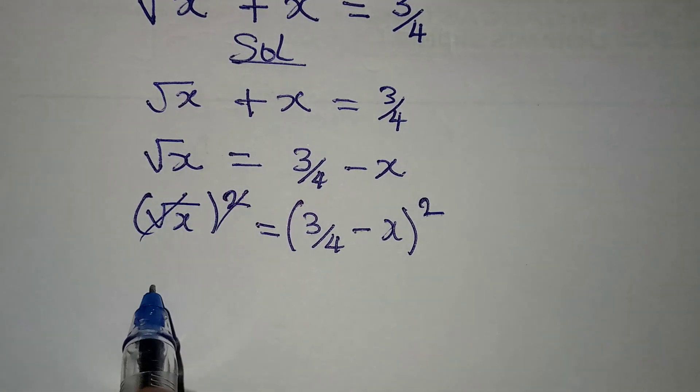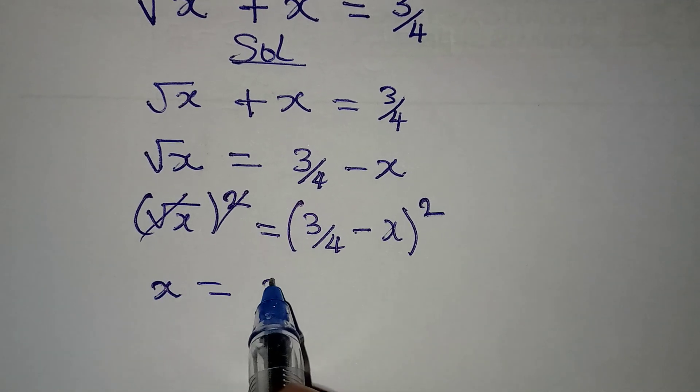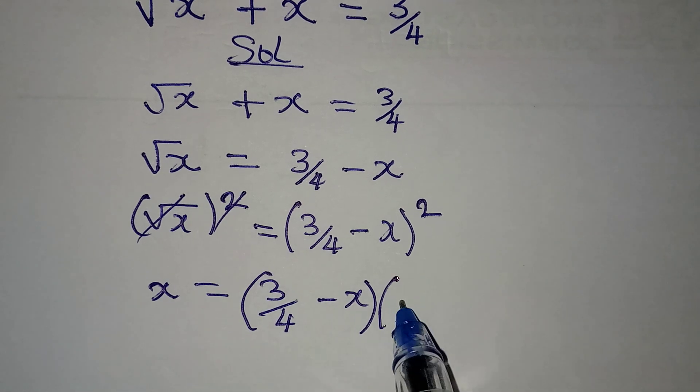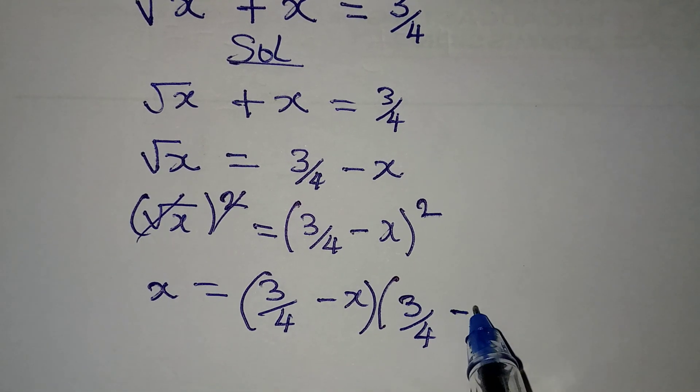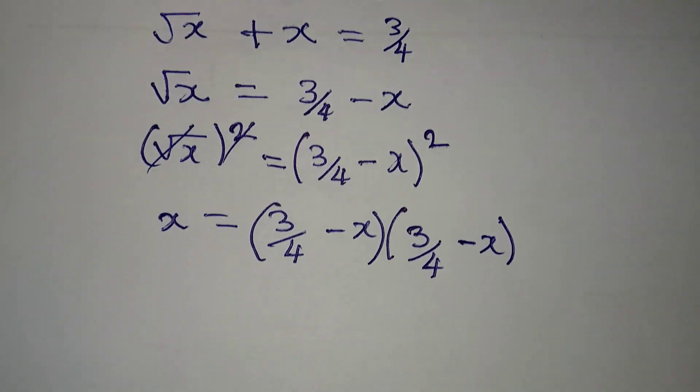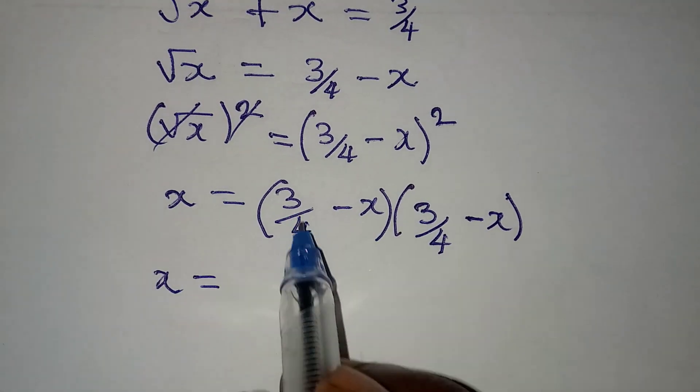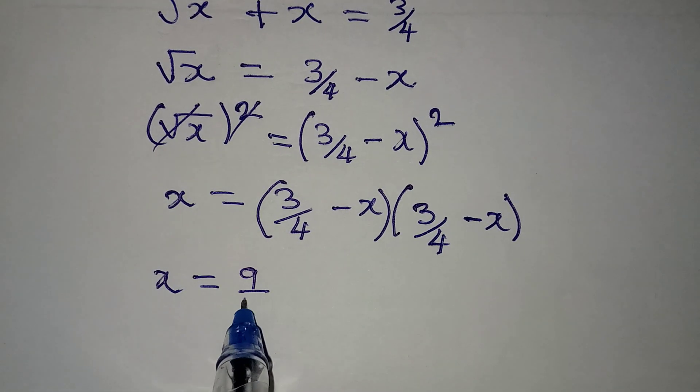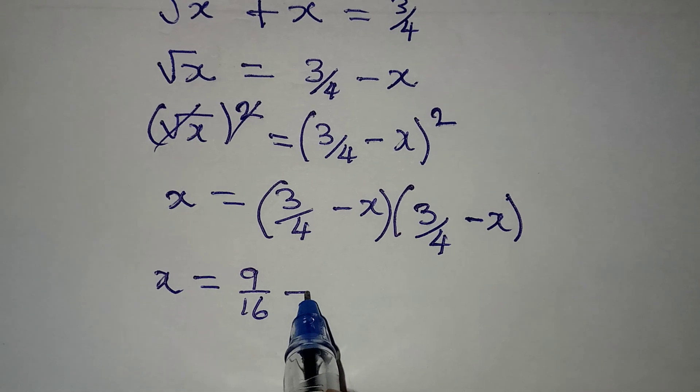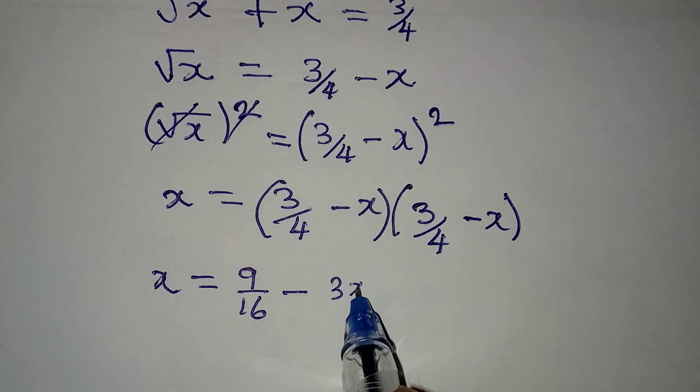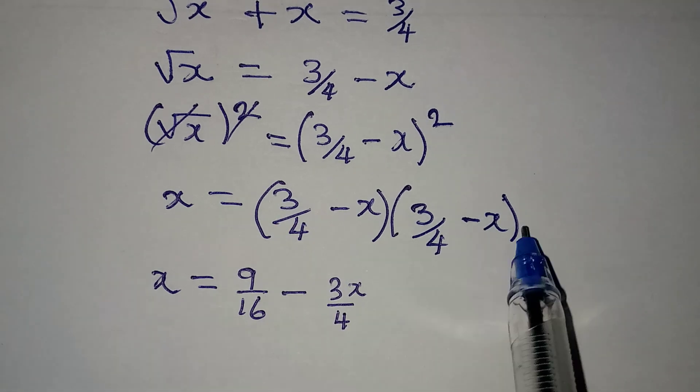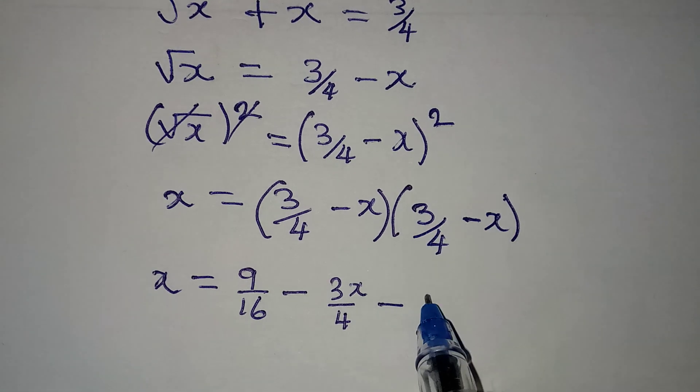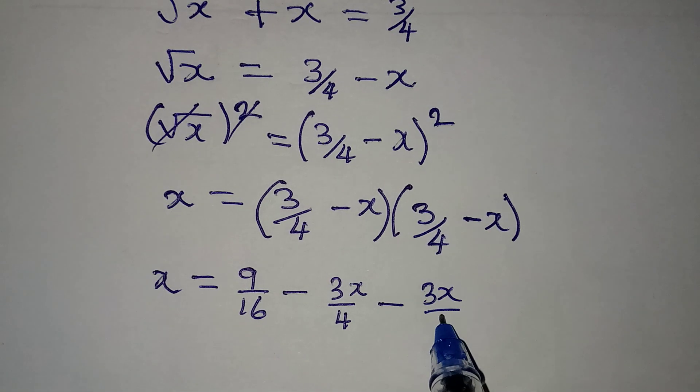This cancels this, and x will be equal to 3 over 4 minus x into 3 over 4 minus x. Now, x is equal to 3 over 4 times 3 over 4, we get 9 over 16, then we have 3x over 4, if we multiply this and this, and then minus 3x over 4 as well.